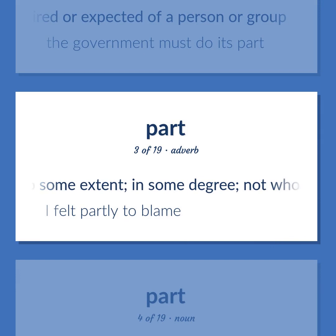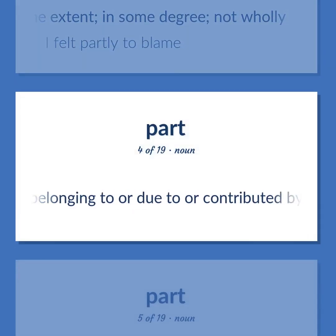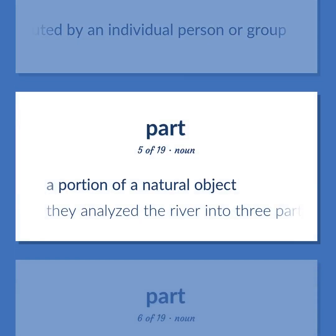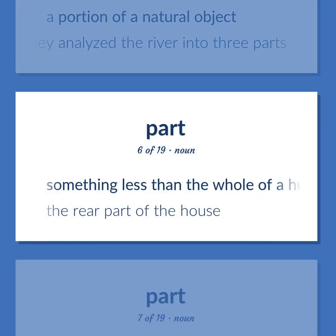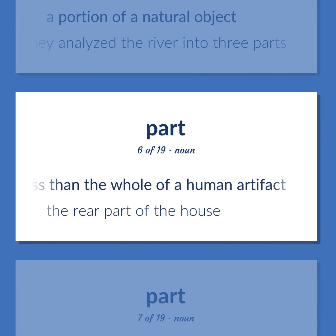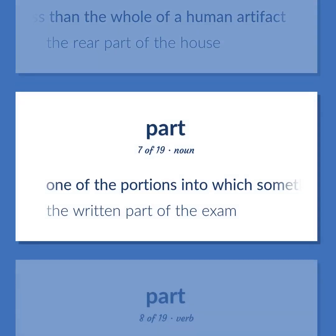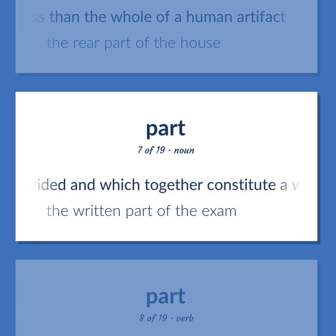To some extent, in some degree, not wholly — I felt partly to blame. Assets belonging to or due to or contributed by an individual person or group. A portion of a natural object — they analyzed the river into three parts. Something less than the whole of a human artifact — the rear part of the house. One of the portions into which something is regarded as divided and which together constitute a whole — the written part of the exam.